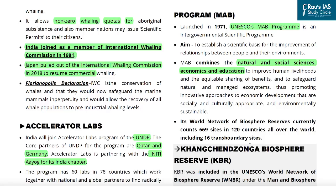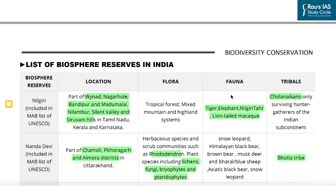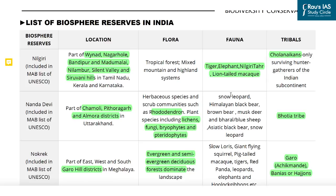Many biosphere reserves from India have been recognized under the UNESCO World Network of Biosphere Reserves. Last year, UNESCO recognized Kanchenjunga Biosphere Reserve under this programme. The Prelims Compass covers key aspects including that Kanchenjunga is one of the highest ecosystems in the world, located at the trijunction of India in Sikkim, bordering Nepal to the west and Tibet to the northwest. It was also recognized as India's first mixed World Heritage Site in 2016. A list of biosphere reserves in India and those listed under the UNESCO MAB programme is also provided in the Prelims Compass.